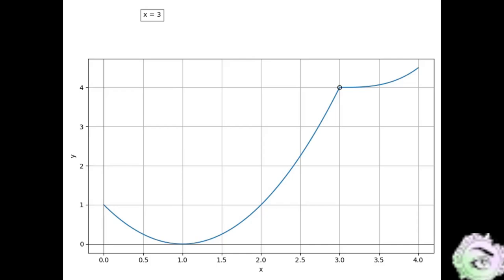Let's concentrate on the left limit at 3. To find the left limit at 3, we need to approach 3 from the left side. We have to choose a starting point, but if you re-examine previous examples, you'll see that the starting point is not important, as the limit depends on the behavior of the function values closest to 3. So, as long as we approach 3 from the left, the starting point is not important.